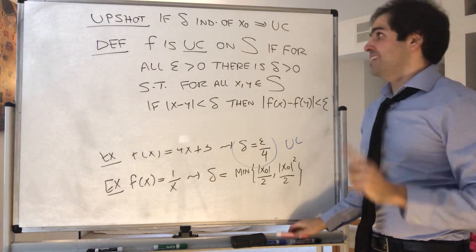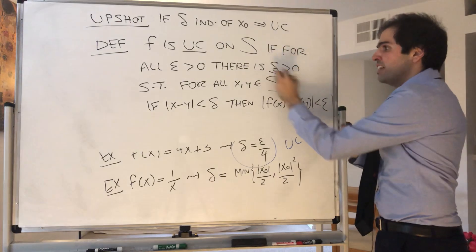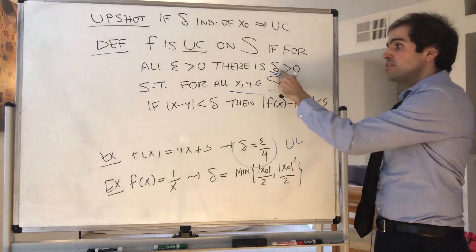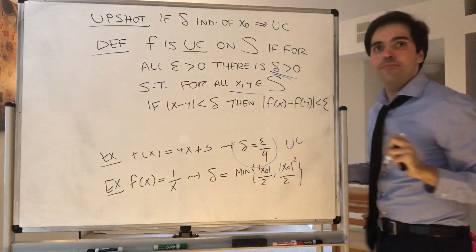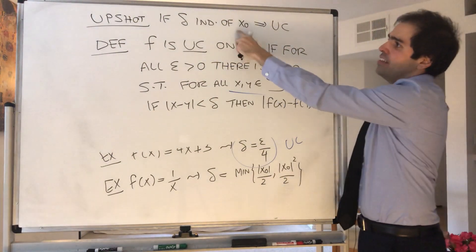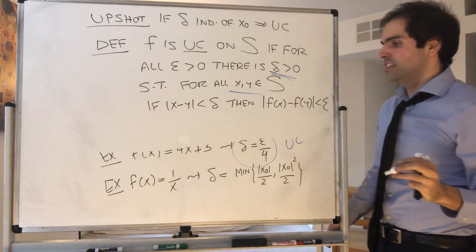I know it looks the same, but you have to understand here delta doesn't depend on x and y. So there's a delta purely just depending on epsilon that makes this work. So as I said, if delta is independent of x0, this is actually uniform continuity.